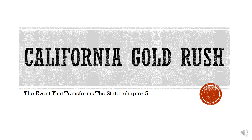By 1850, California's population had grown to 93,000 people — a huge increase in just a two-year span. Seventy-three percent of that population was between 20 and 40 years old, so it was a young population coming into the state, and 92 percent was male — very much a disproportionately male population.